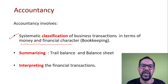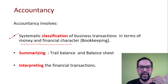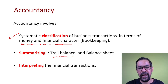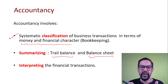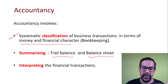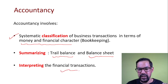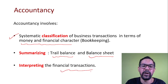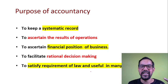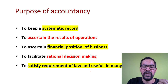First we have bookkeeping, where we create different ledgers, collect data, and create different segments. This entire data is in terms of money and has a financial character. Then we summarize that data in a trial balance and balance sheet. In bookkeeping we have different ledgers for each entity a company deals with, and in the trial balance and balance sheet we summarize that data. After that, we interpret the financial transactions using balance sheet data for future decision making.